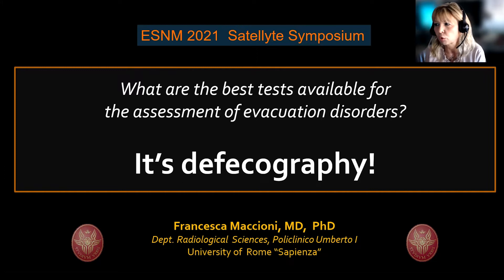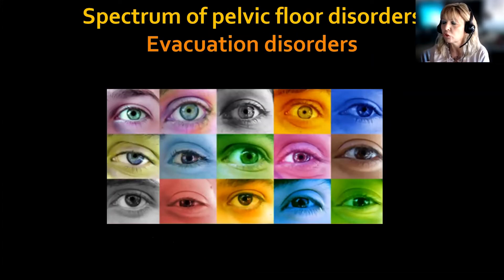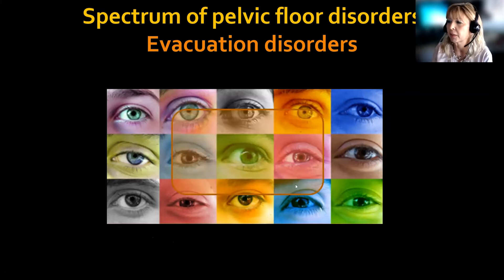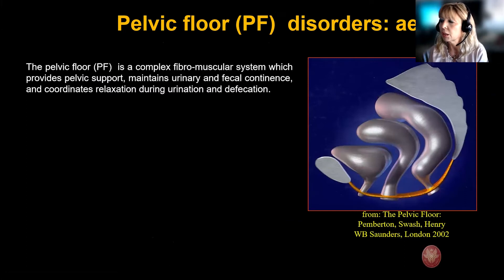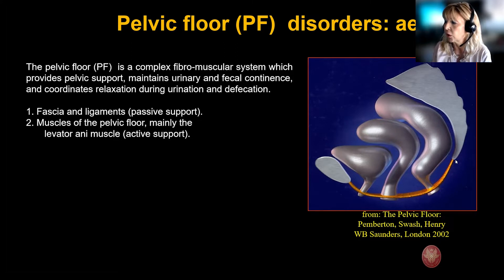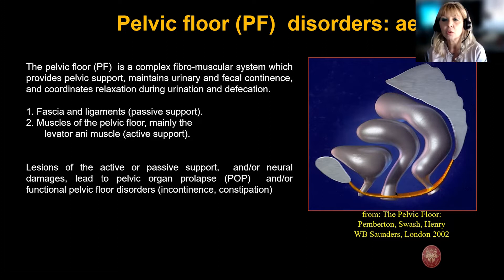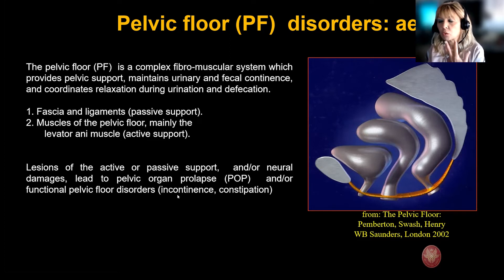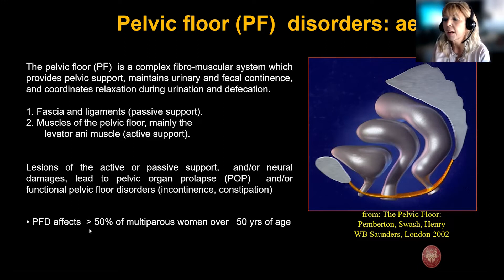In other words, what's the role of radiology in the evaluation of these disorders? Evacuation disorders are just a part — a large part — of pelvic floor disorders. They are a wide spectrum of disorders, usually determined by lesion of the pelvic floor, which is a complex fibromuscular structure with a passive component — the fascia and ligaments — and an active component, the levator ani muscle. Any lesion of these components determines pelvic organ prolapse or pelvic floor dysfunction, leading to incontinence, constipation and other disorders. They affect over 50% of women over the age of 50 years.